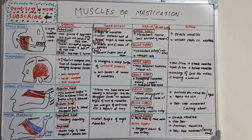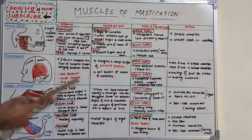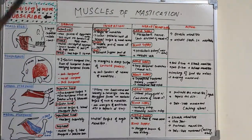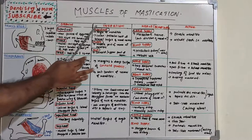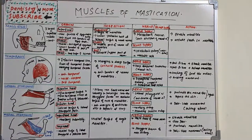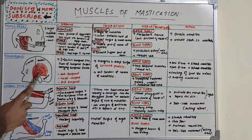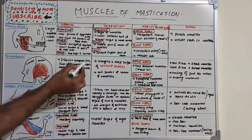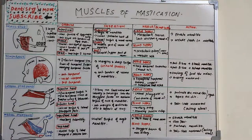The temporalis originates from three structures on the temporal bone: the temporal line, the temporal fossa, and the temporal fascia. It has three portions — anterior, middle, and posterior temporal — all giving rise to this fan-shaped muscle.